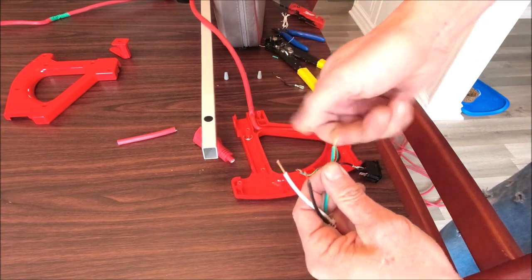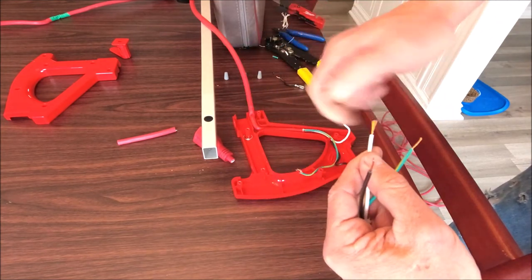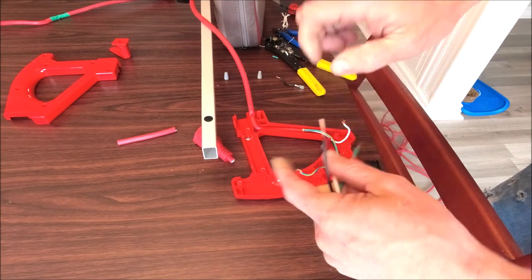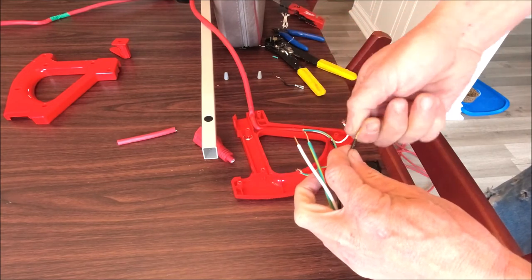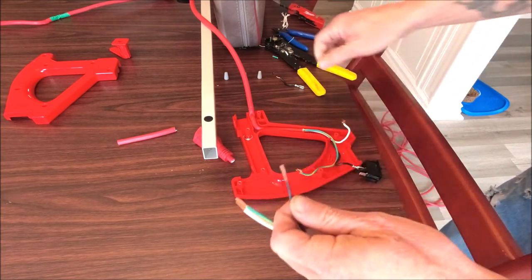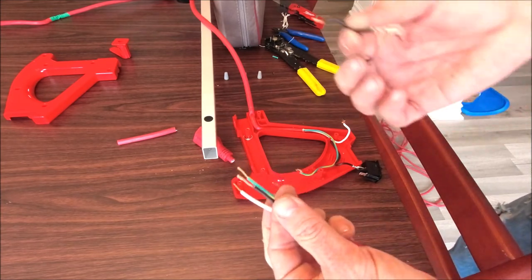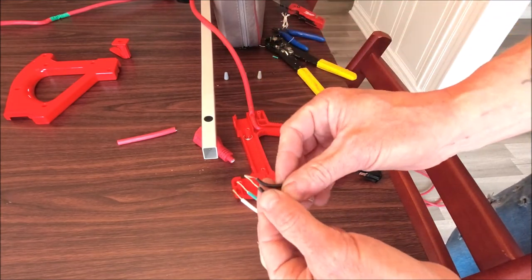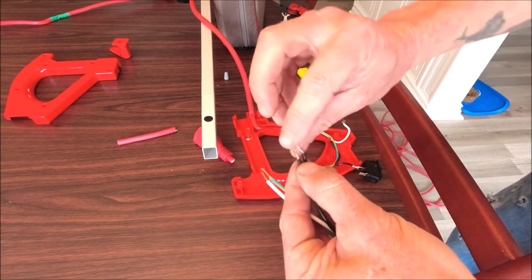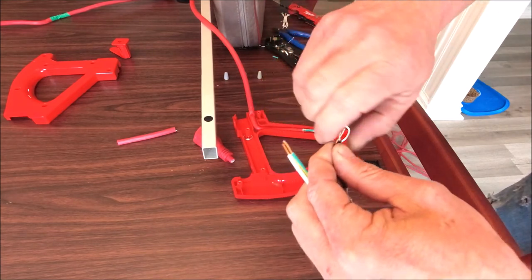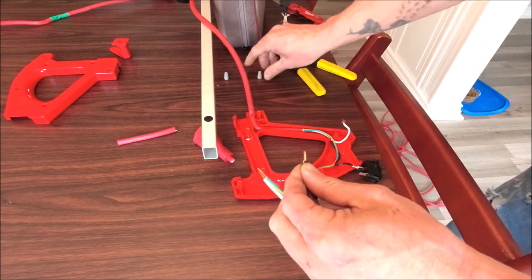When I do this, I like to give them a little twist just to keep them from fraying up on me and going crazy. First thing we're going to do here is take the black lead that we cut off the other one, put that together, and put a wire nut on it here to make that a good solid connection.